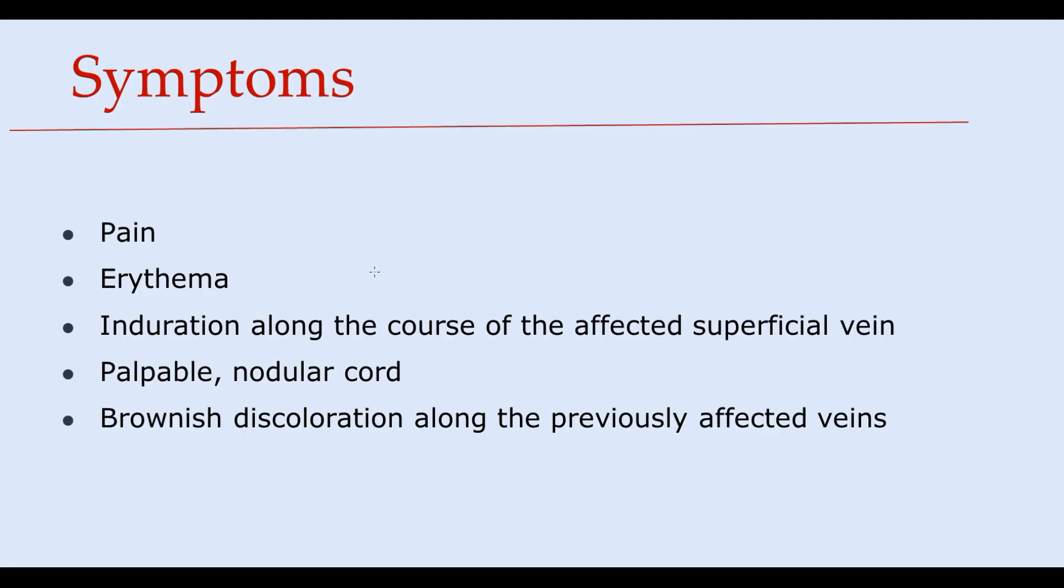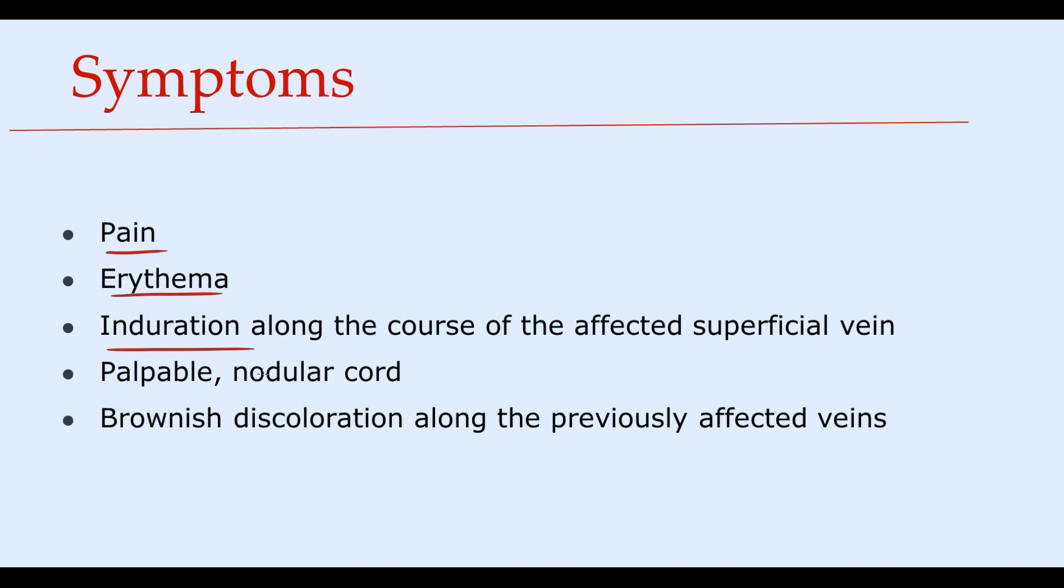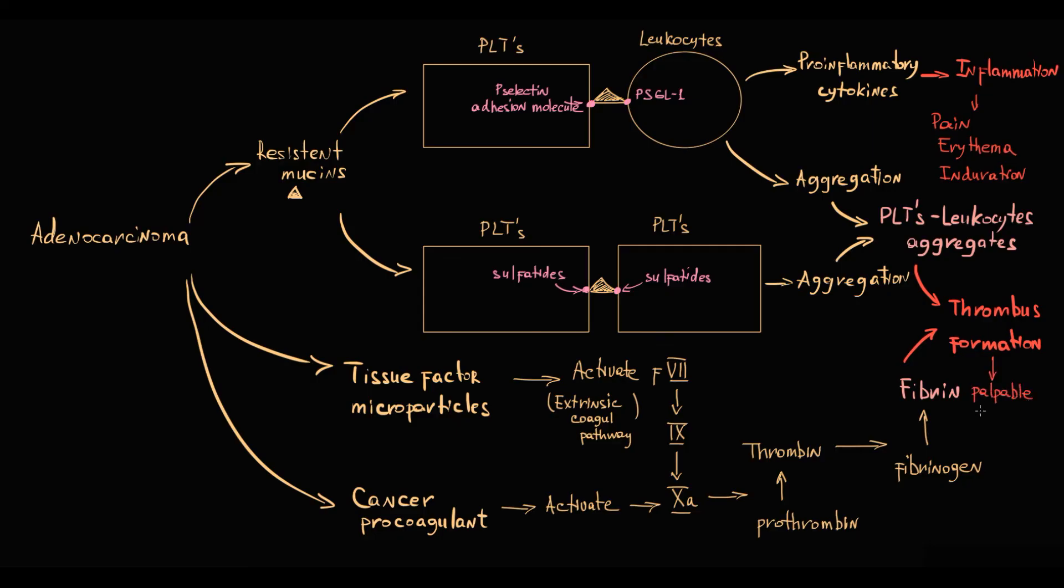In terms of clinical findings, patients with thrombophlebitis migrans present with pain, erythema, and with induration along the course of the affected superficial vein. And by induration we understand that the vein is hard and tender with palpation. Obviously these three clinical signs are caused by inflammation. Also during palpation we can find palpable nodular cord, which is the thrombus within the affected vein.